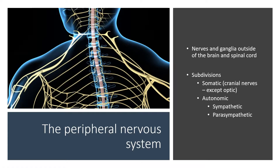Your peripheral nervous system is made of nerves and ganglia outside of the brain and spinal cord. There are two subdivisions: the somatic, which includes your cranial nerves except the optic nerve, and the autonomic, which includes the sympathetic branch and the parasympathetic branch.